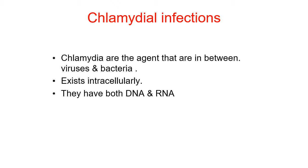Good morning students. Today we will see another type of conjunctivitis. We have already seen bacterial conjunctivitis and allergic conjunctivitis. Today another variety is called chlamydial conjunctivitis — conjunctivitis caused by chlamydia. Chlamydia are agents that are in between viruses and bacteria. They exist intracellularly and have both DNA and RNA.